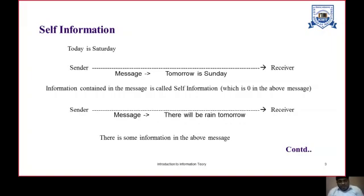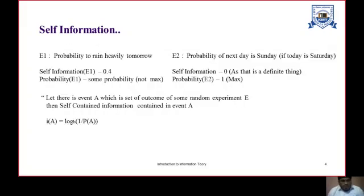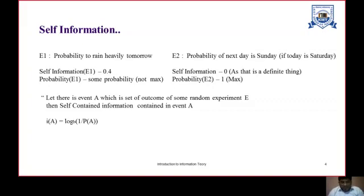But when the sender says that there will be rain tomorrow, then there is some information about the rain for the receiver in this particular message. So we have two events: the probability of rain heavily tomorrow, or the probability that the next day is Sunday if today is Saturday. In the first event there is some self-information, and in the second event there is no self-information. The probability of the second event is maximum, because if today is Saturday then tomorrow will definitely be Sunday. But in the first event, the probability is something but not maximum.